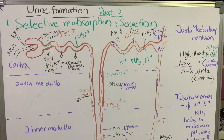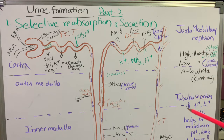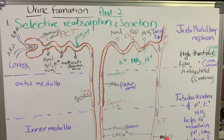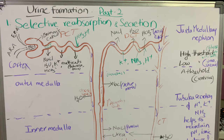The filtrate then moves into the collecting duct, where a considerable amount of water is reabsorbed to produce concentrated urine. Tubular secretion also occurs here — H+ and K+ ions are secreted into the filtrate. Some amount of urea also passes out from the filtrate into the medullary interstitial fluid to maintain the high osmolarity of the medullary region. Water reabsorption in the collecting duct also depends on conditions, and is likewise known as facultative reabsorption.